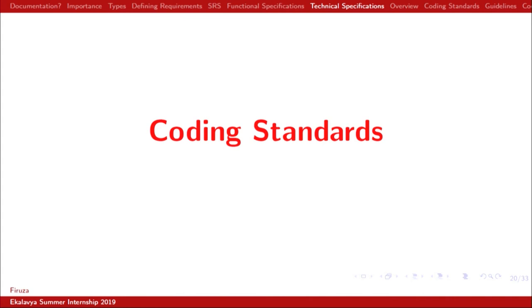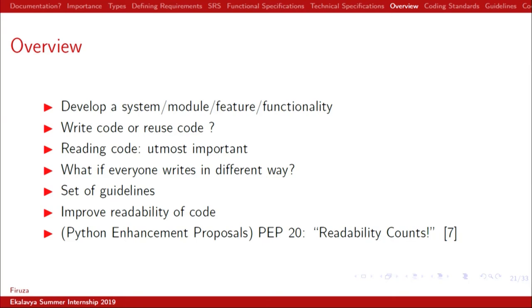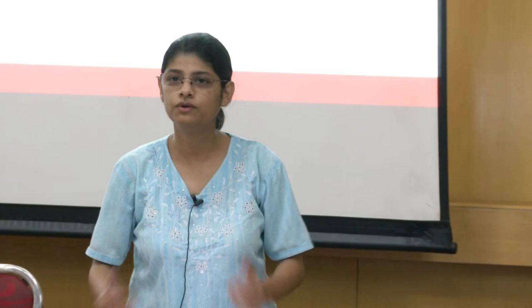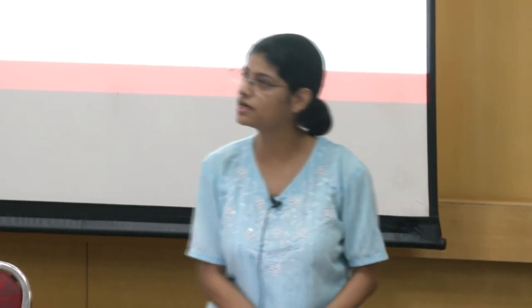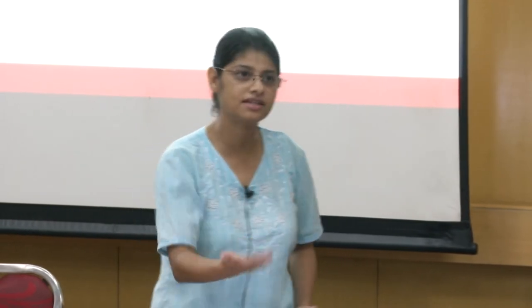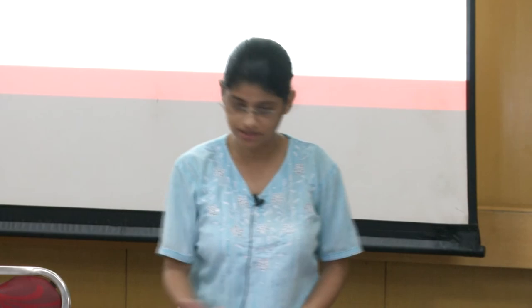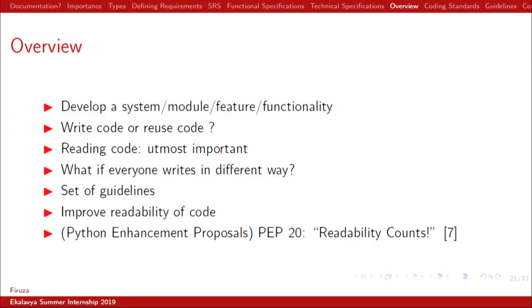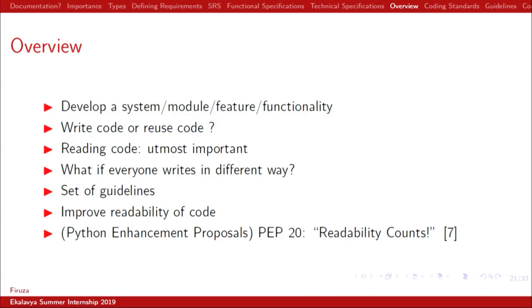Now we come to coding standards. Suppose you are told to build a system — what coders would generally do is take a computer and start typing, without even searching the internet to see if such a system already exists. We are advised by seniors to go on the internet, find out whether the functionality exists, whether any module can help, and if so, use and modify it. We have to read a lot of code and if people write in different ways, how would we interact? So we follow a set of guidelines while writing code so that everybody understands, everybody can collaborate, and we can form a good community.